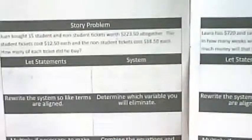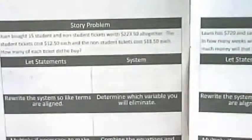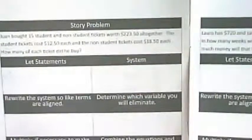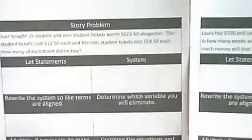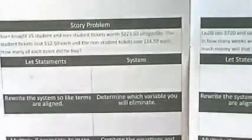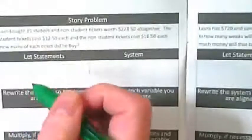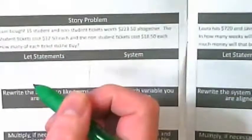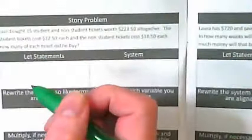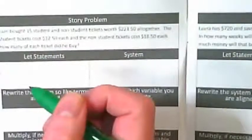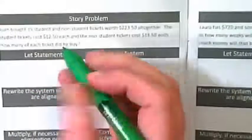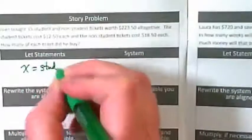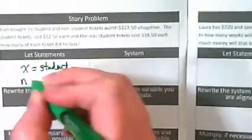So what do we need our let statements to be about? How many kinds of tickets are there? Two. Now, the obvious would be to use an S for student and an N for non-student. How many of you did that? That's great. I'm not. My S's always end up looking like fives. I'm going to use X for student, and I'll use N for non-student.